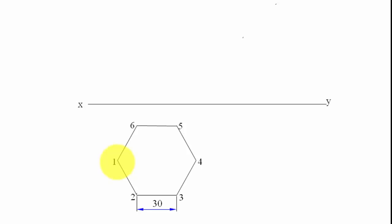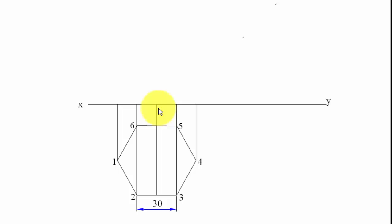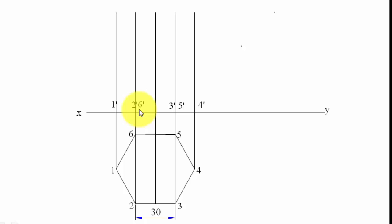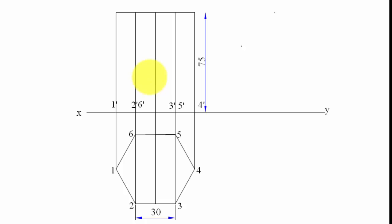Now we project lines from all these points upward and make the corresponding front view. The height of the prism is 75 mm. The base points are marked — one-dash corresponds to one's top view in the front view; two and six overlap at the front giving two-dash and six-dash. Let's complete all points and now worry about the cutting plane.